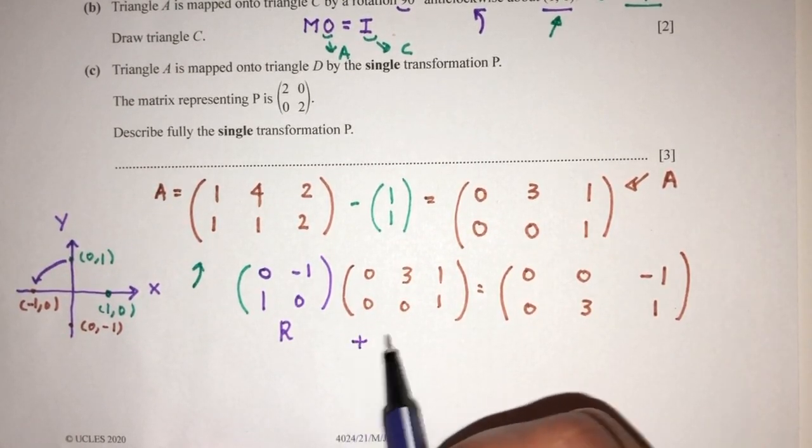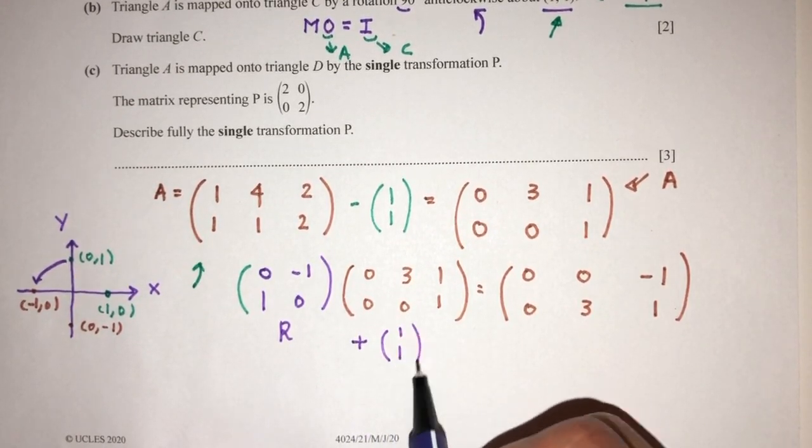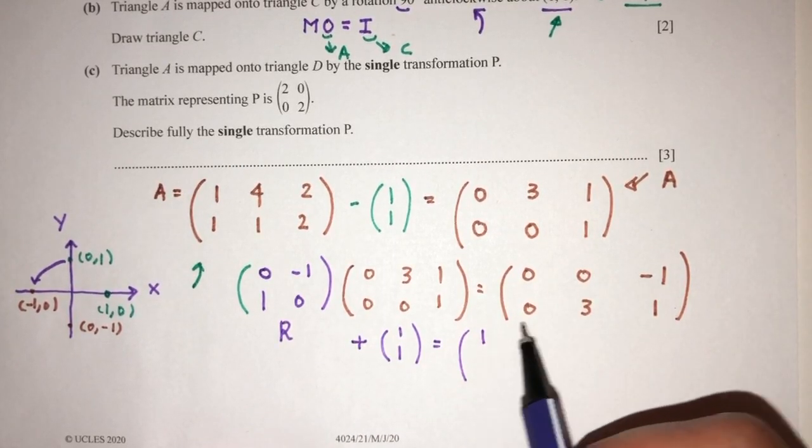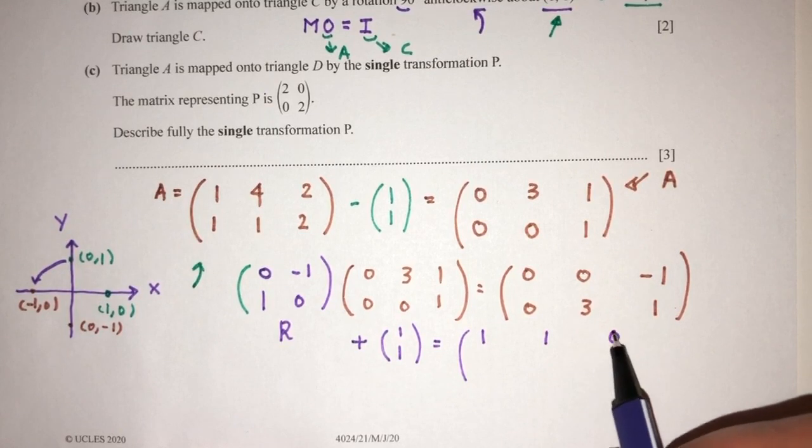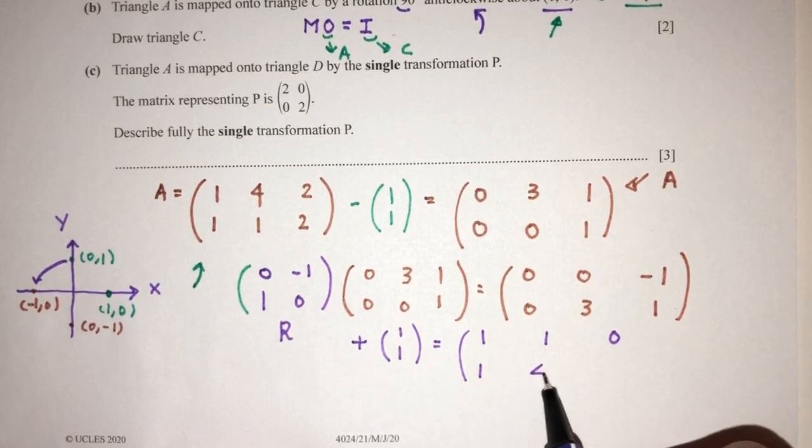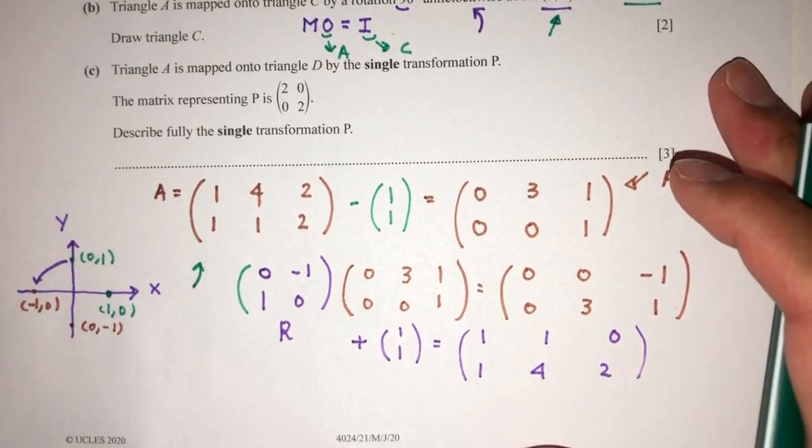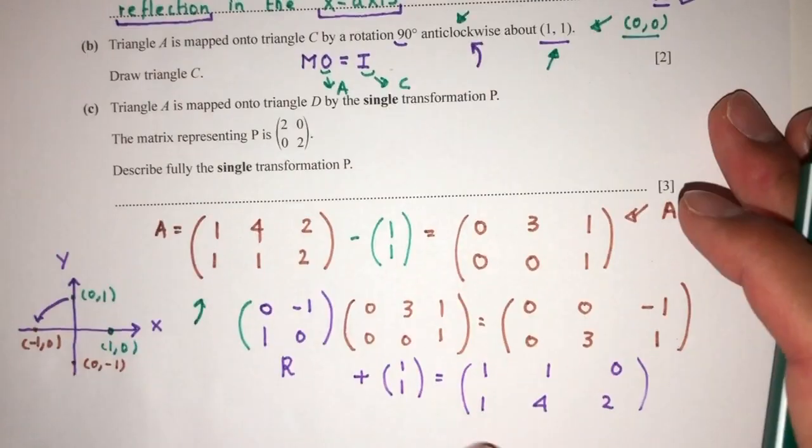Now, finally, you have to add back the center that you have minus in the first place. It will be (1,1), (0,1), and this will become (1,4,2).